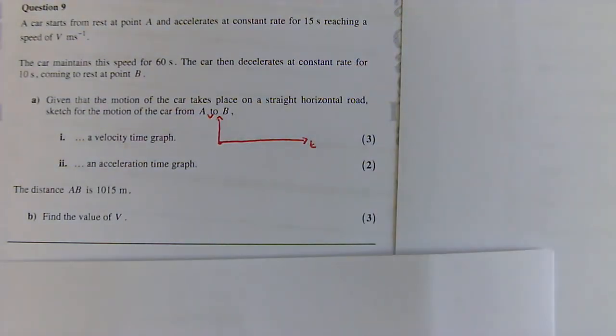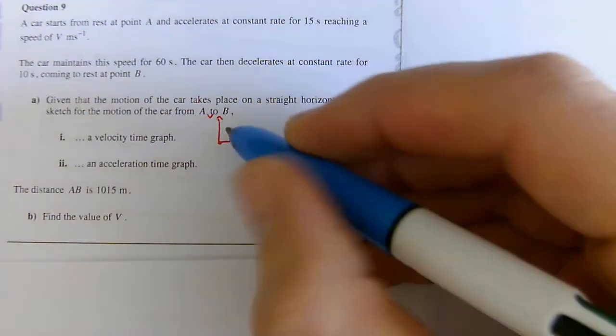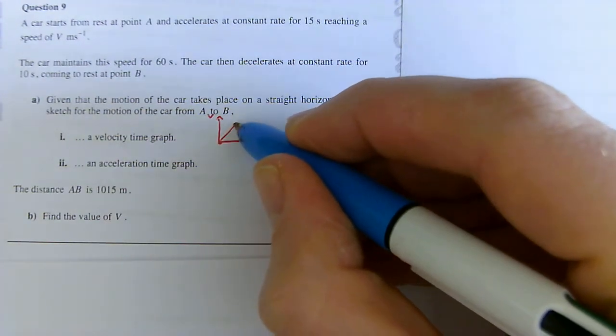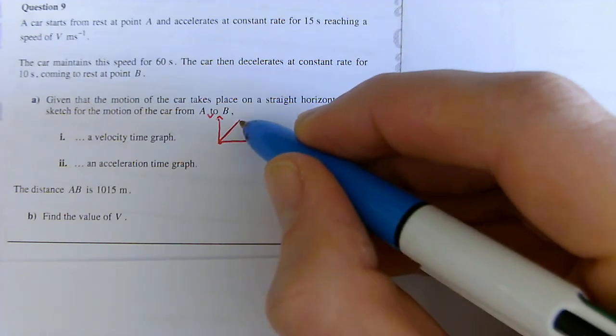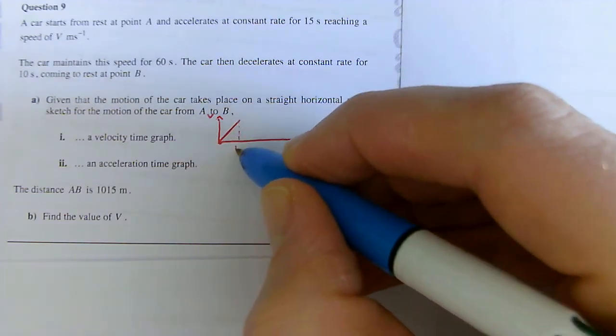Okay, and we know that the car accelerates at a constant rate for 15 seconds. So, there we go. There's my constant rate, that means the gradient is constant, and it's going to be 15 seconds. So, there's my 15 seconds.